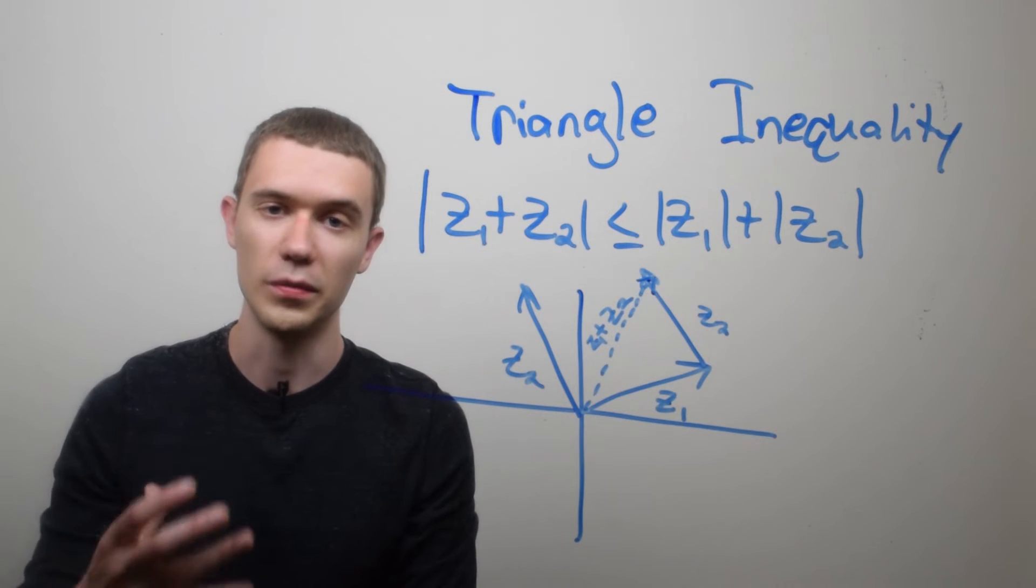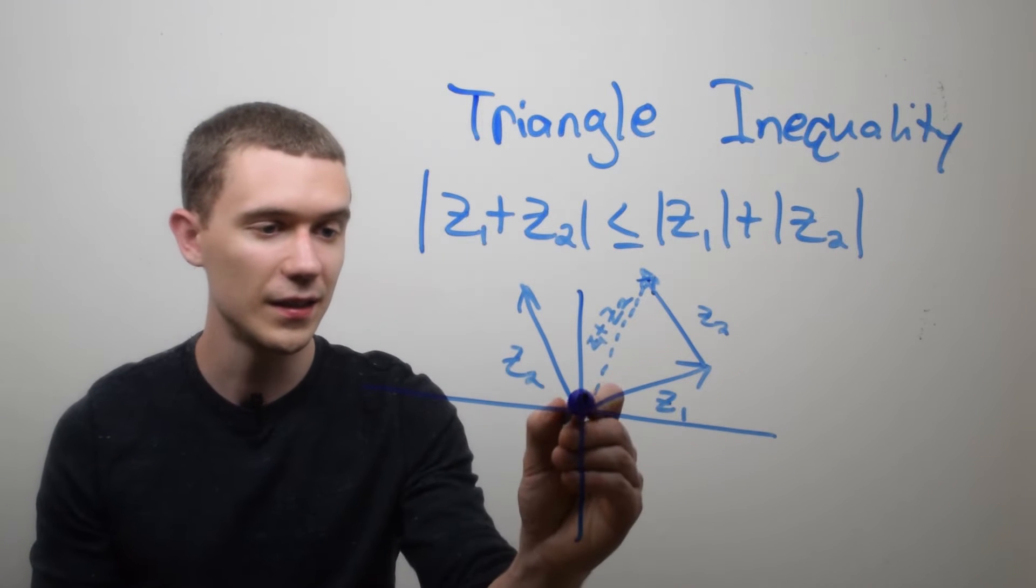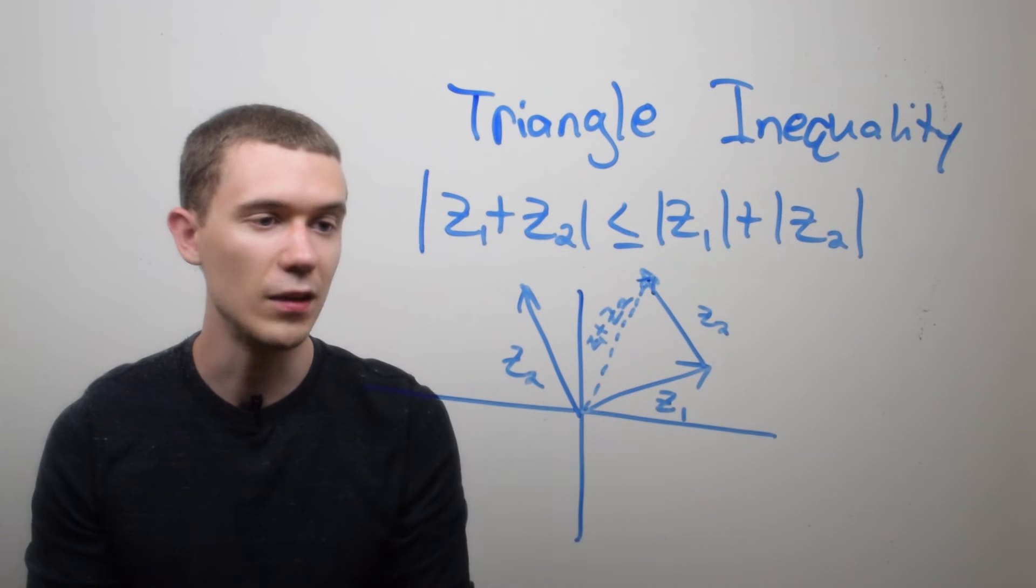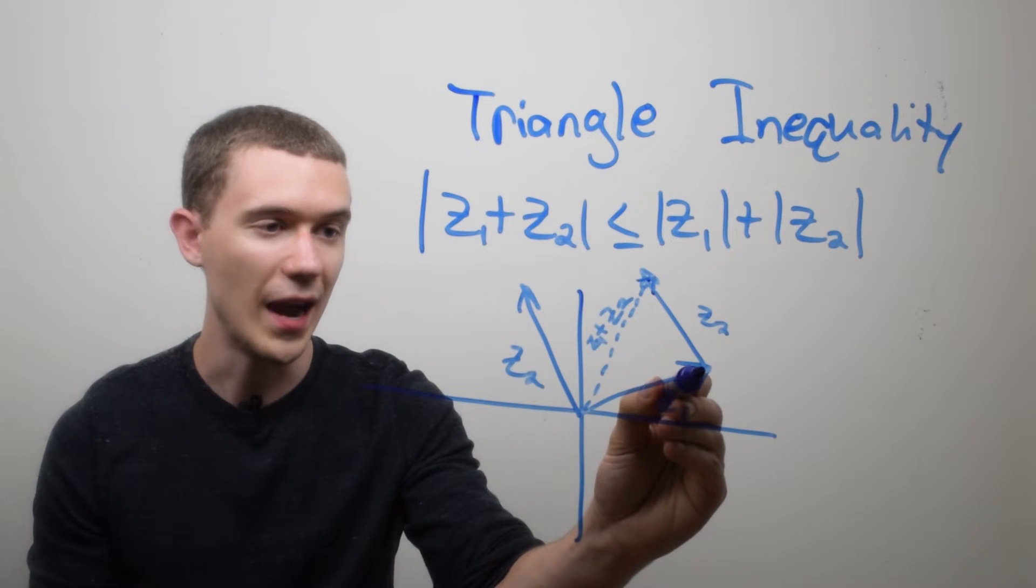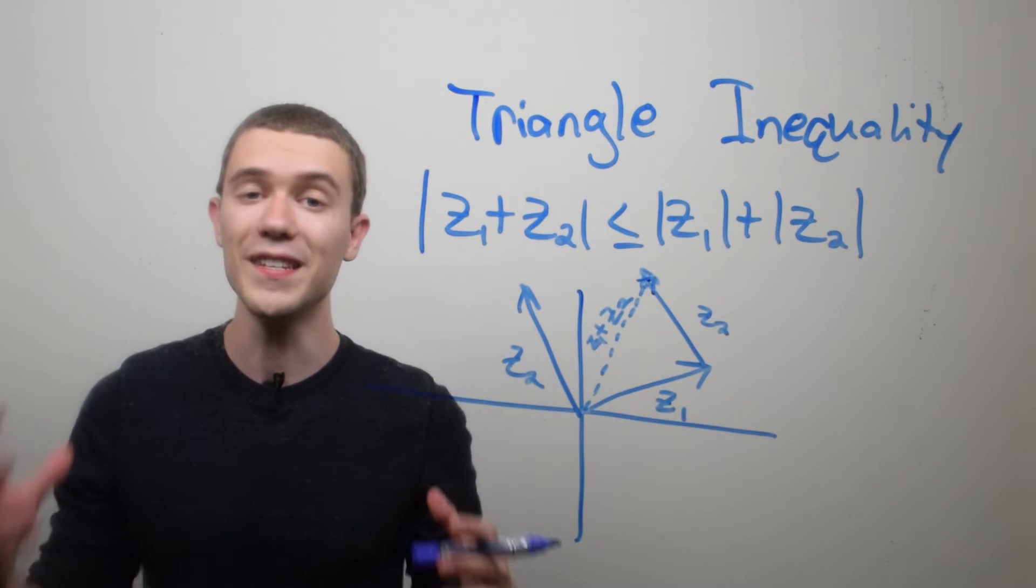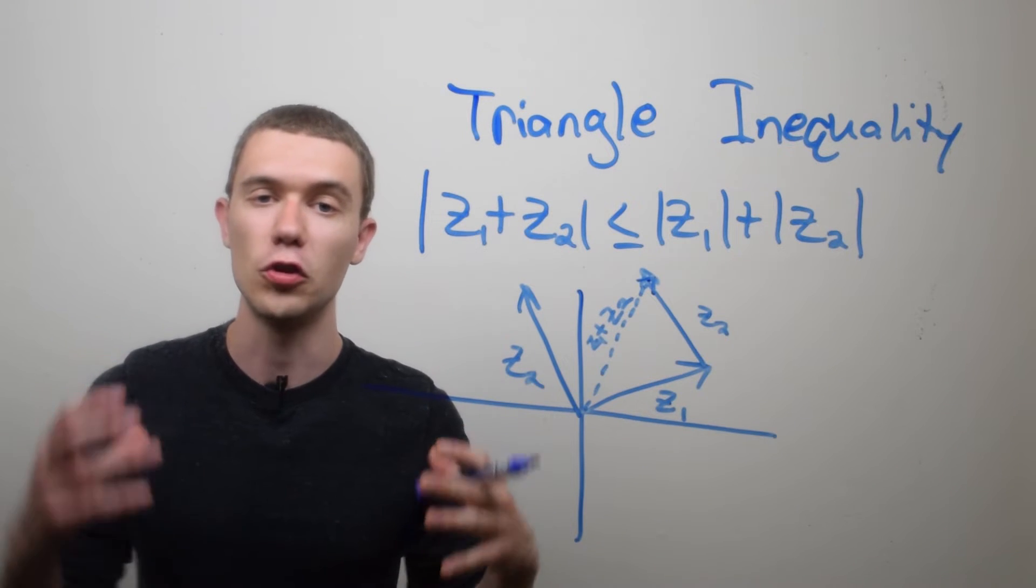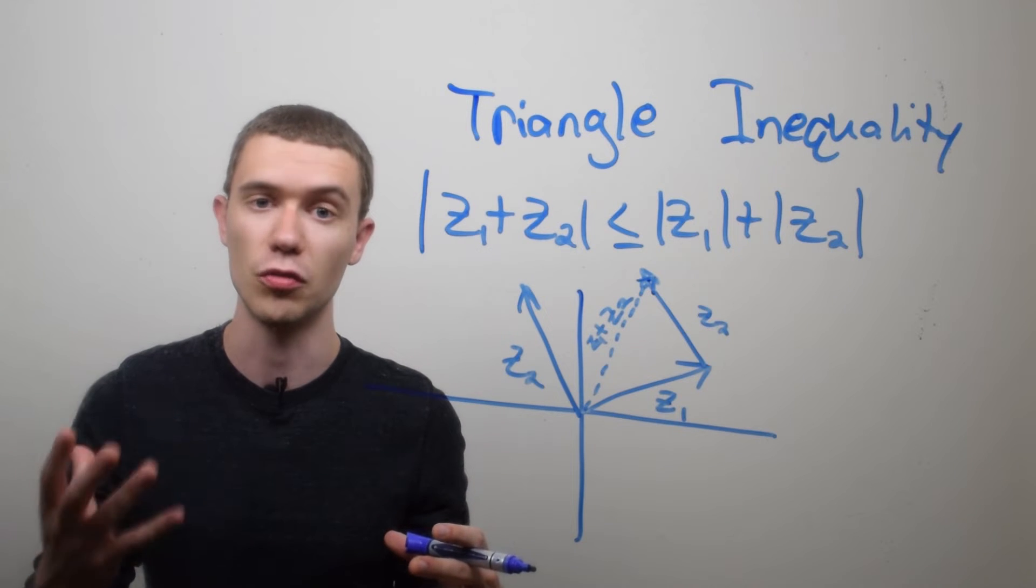So you can kind of think about it in terms of triangles, right? This distance, z1 plus z2, has to be less than going from z1 and then going from z2. This makes a lot of intuitive sense when you think that the shortest distance to something is the straight line between them.